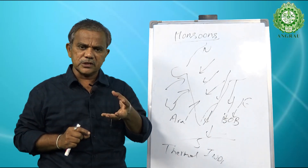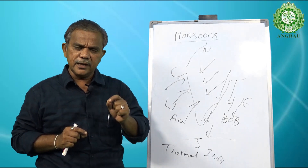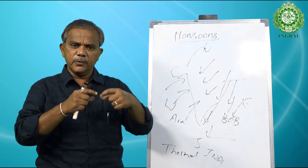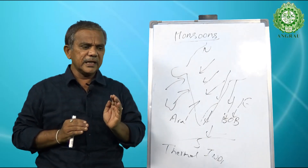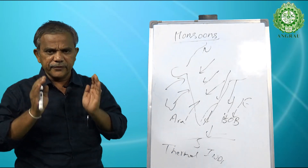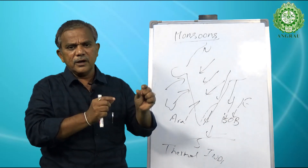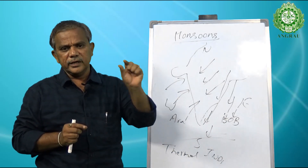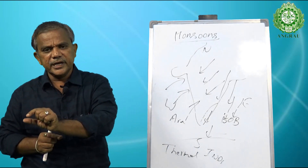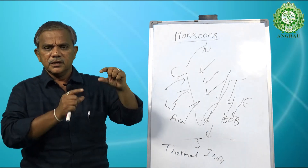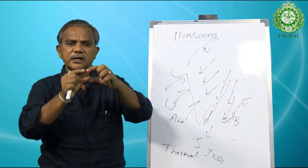Under the monsoon period, rainfall is confined to a maximum of 4 months. Even with residual soil moisture extending for about 15 to 20 days, we may confine crop-raising to 140 to 150 days. The length of the growing season is also dictated by temperature. In temperate regions, for example, it is the period between the last date of snow fall in spring and the first date of snow fall in autumn — roughly March to November.